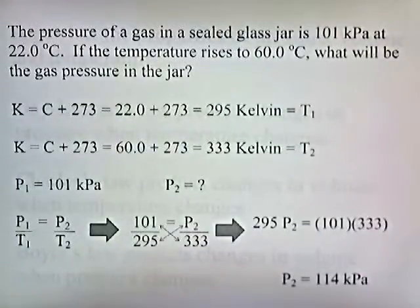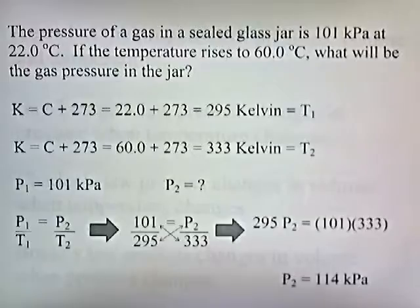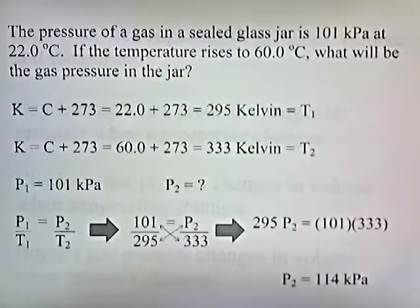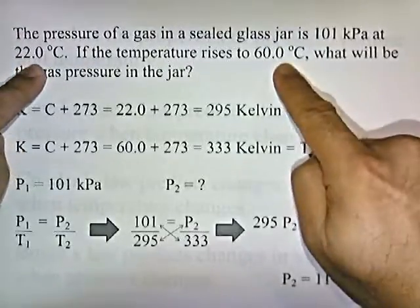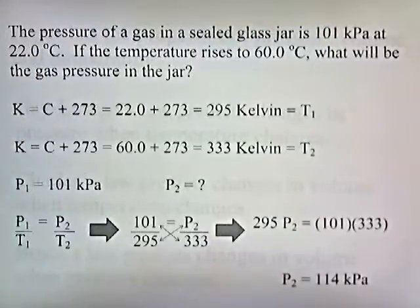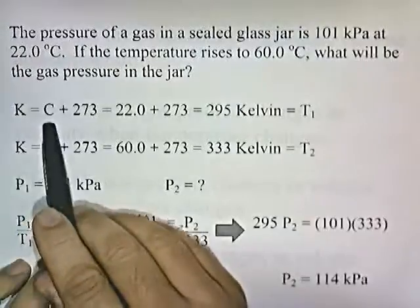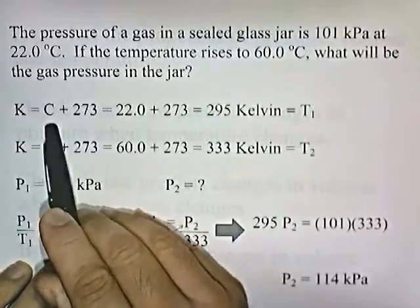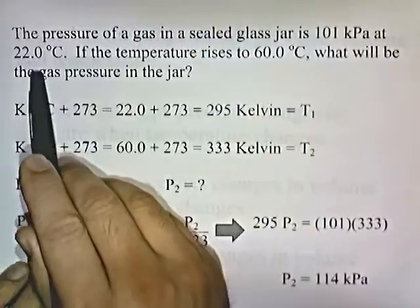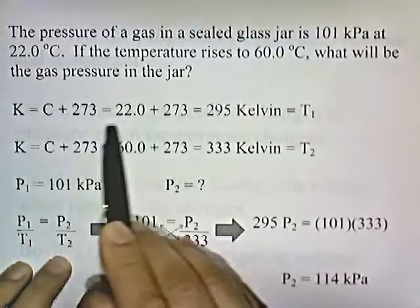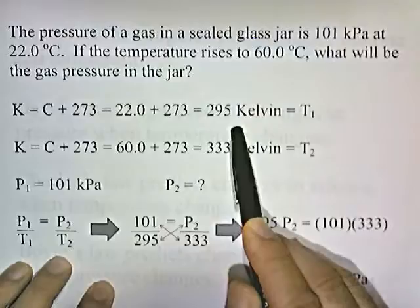Let's try a problem. The temperature of a gas in a sealed glass jar is 101 kilopascals at 22 degrees Celsius. If the temperature rises to 60 degrees Celsius, what will be the gas pressure in the jar? First, we need to convert the Celsius temperatures into Kelvin. The formula is K equals C plus 273. So 22 degrees Celsius becomes 295 Kelvin — that's the initial temperature.